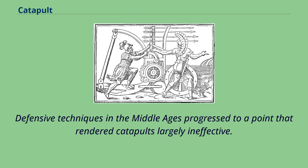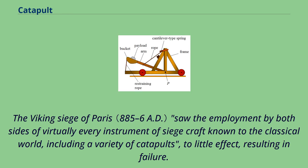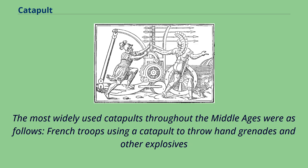Defensive techniques in the Middle Ages progressed to a point that rendered catapults largely ineffective. The Viking siege of Paris saw the employment by both sides of virtually every instrument of siege craft known to the classical world, including a variety of catapults, to little effect, resulting in failure.